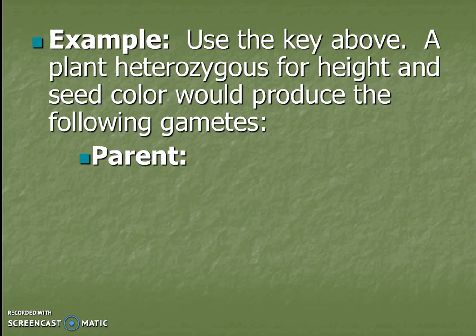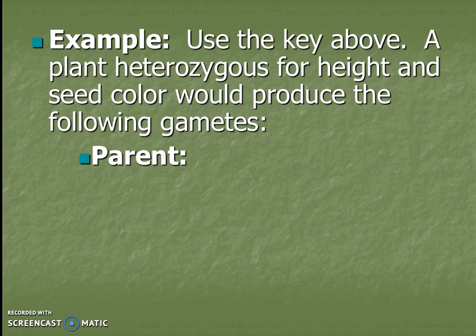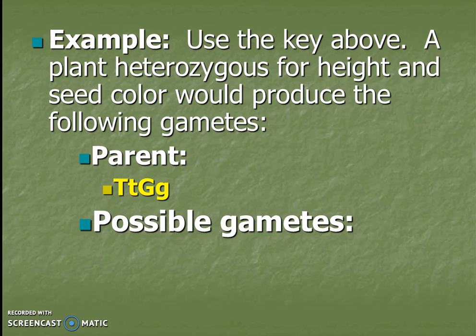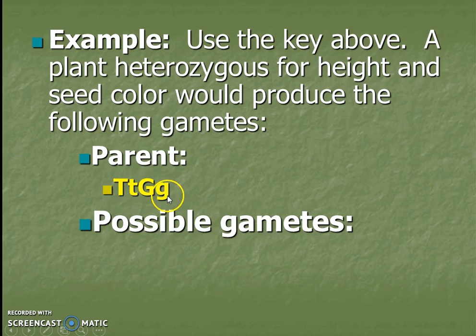Using the same key, here's our example: a plant that's heterozygous for height and heterozygous for seed color. The diploid parent plant would be big T, little t for height and big G, little g for seed color. Using the law of segregation to find the possible haploid gametes: this is diploid because we have two T's and two G's. Each possible gamete will have one T and one G.